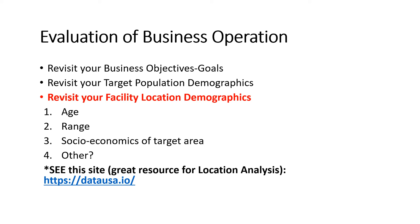You want to revisit your target population demographics. By now you should know exactly — you have a specific city or area where you've placed your facility. You want to know what the average age is, what the range is, the socioeconomics of that target area, and some other statistics. If you go to the link datausa.io, it's an incredible resource. I've got it on Canvas as well, and you're going to want to use it for Project 6. It will answer all of these questions — a great reference with very strong credibility.